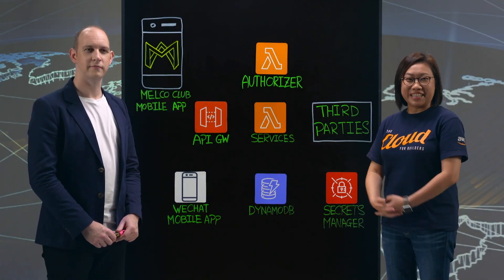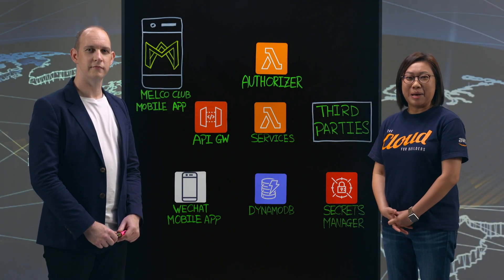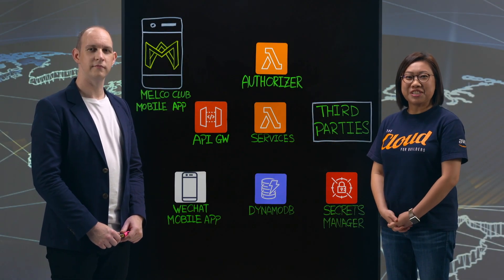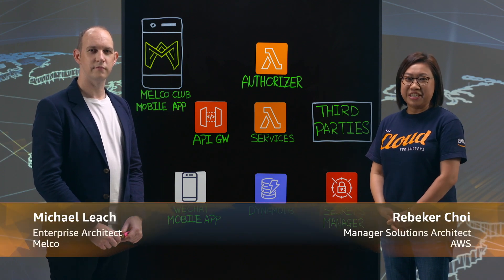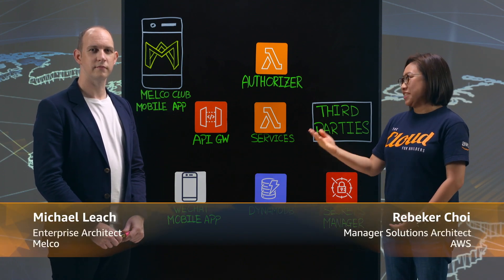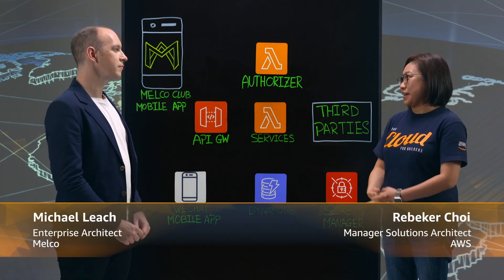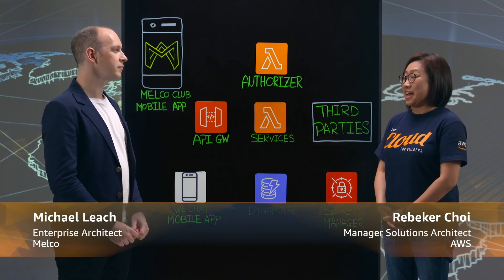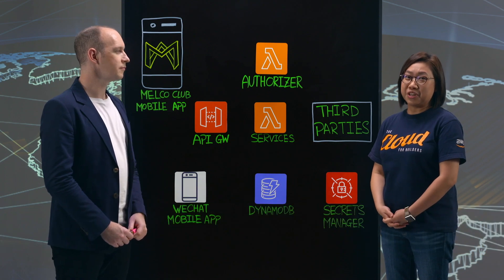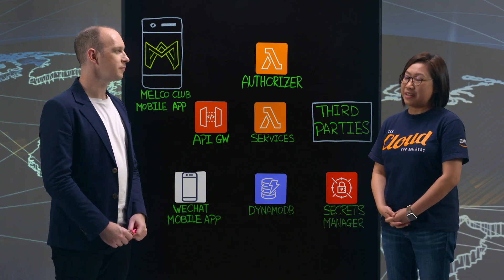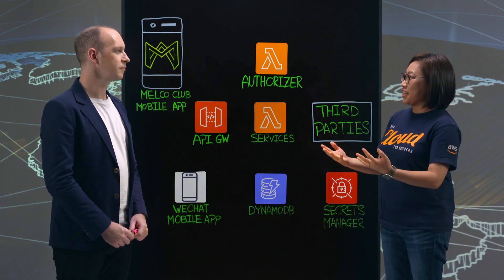Welcome to This is My Architecture. I'm Rebecca Choi, Solutions Architect from AWS. Together with me today, we've got Michael Leach, who is the Enterprise Architect of Malco Resorts and Entertainment. Welcome, Michael.